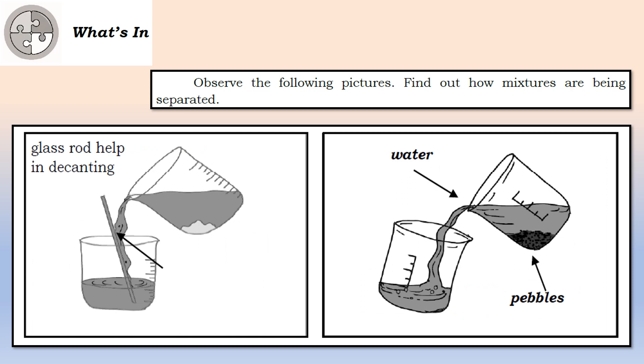Another example sa makikita natin, glass rod help in decanting. Gumagamit ng glass rod, yung panghalo na pa na glass para sa process ng decantation. At ang pangalawang picture naman, yung water at ang pebble. Titignan natin ngayon kung paano ba sineparate yung mga mixture sa pamamagitan ng dalawang picture na ating tinitingnan.